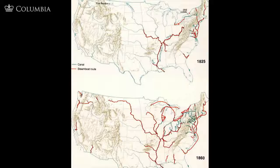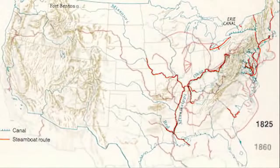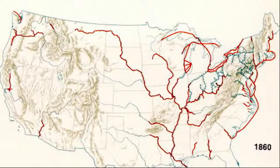This is a map of canals and steamboat routes. The top is 1825, the bottom is 1860. What it shows is the proliferation of canals and rivers with steamboats on them in that 35-year period. What we're talking about is the expansion of the economic marketplace and how more and more people are drawn into market relations—wage labor in cities, commercial farming in rural areas.